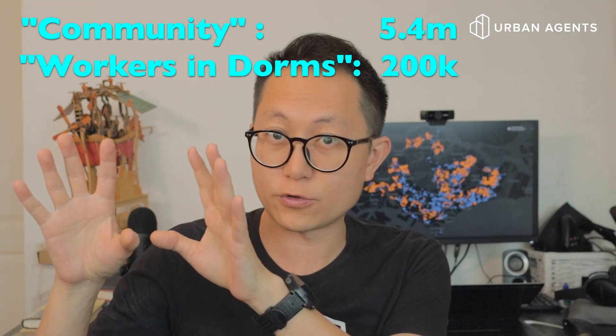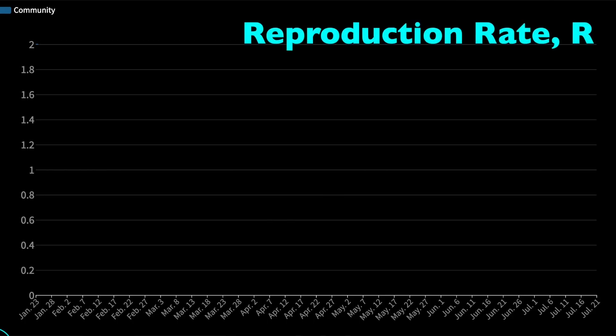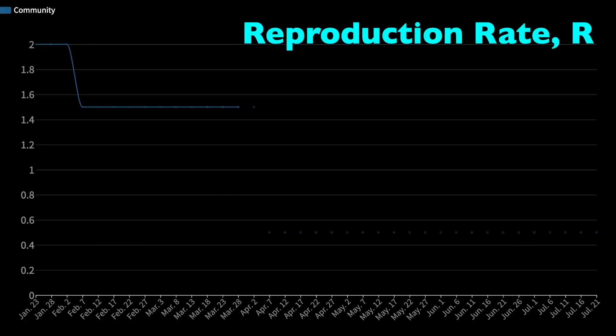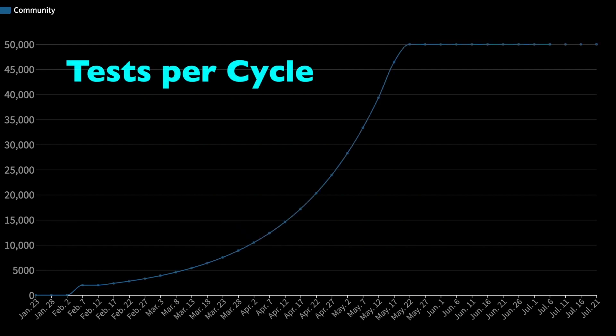For the first segment, community, I've assumed a population of 5.4 million, and for migrant workers living in dorms, I've assumed 200,000, which is roughly the number currently living in the dormitories. We had our first reported case on 23rd January, and I've assumed everything starts from that first infected person. I've assumed a reproduction rate of 2, dropping to 1.5 by early February when Singapore declared DORSCON Orange. Finally, I made the assumption that R dropped to 0.5 when the circuit breaker measures came into effect. I've also made pretty aggressive assumptions on testing velocity — as of 14 April, they've cumulatively tested 60,000 people, and I allow testing capacity to increase to a maximum of 50,000 tests per cycle, roughly 10,000 tests a day.